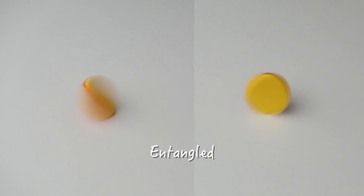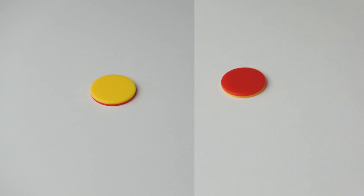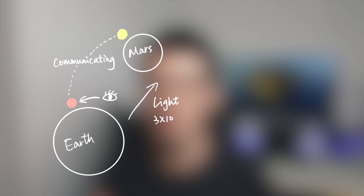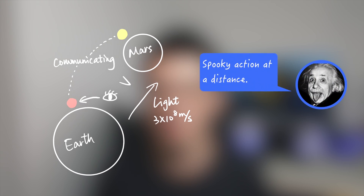Entanglement happens between two or more qubits. Imagine these two spinning coins are two entangled qubits. If I measure the value of one qubit, the other will collapse to a specific value at the same time — because the collapse of entangled qubits happens simultaneously. So if I'm on Earth and you're on Mars, each holding one of two entangled qubits, when I observe mine, yours will turn into a corresponding state at the same time — like magic. These two qubits communicate at a speed faster than light. Einstein called this 'spooky action at a distance.'